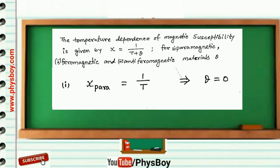In the given question, susceptibility is given by 1 over T plus theta. So comparing these two equations, we get theta is equal to 0.